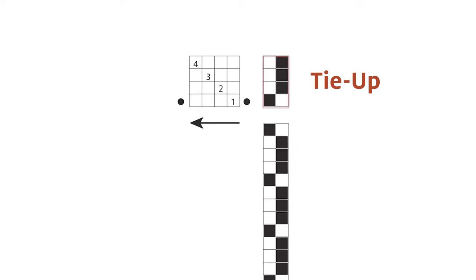Next we have the tie-ups on the top right, showing how to tie up the treadles or which levers to raise on the Cricut Quartet. Each treadle has its own column.